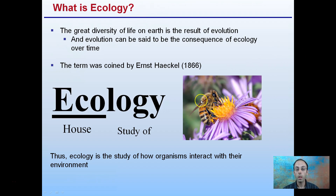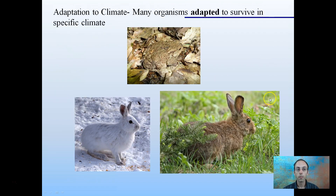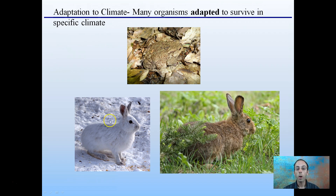As an example, we see the bee interacting with the flower. Adaptations to climate — many organisms have adapted to survive in their specific climate. We see this with camouflage, and also the changing of fur coat color in rabbits: white during the winter months to blend in with the background, and brown to represent the forested, soil-and-leaf-covered ground.